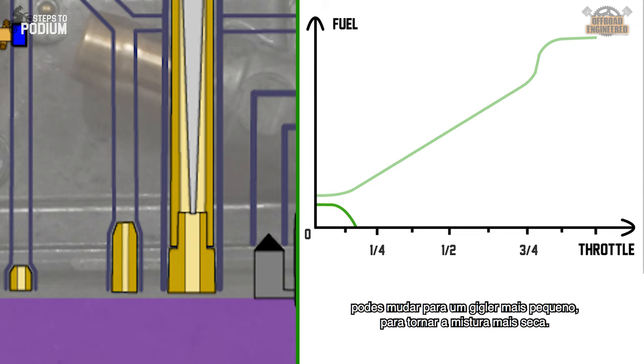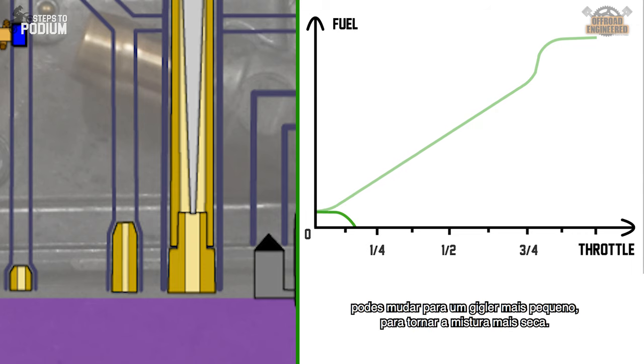If the opposite happens, you can change to a smaller idle jet, leaning the mixture out.